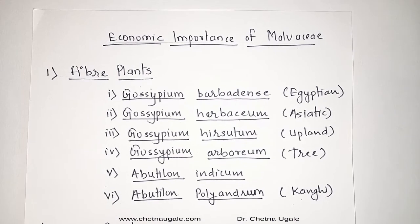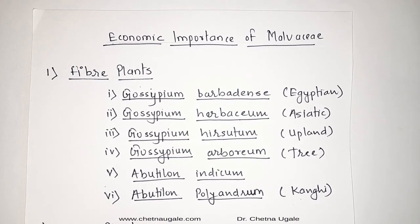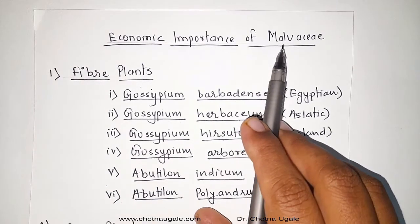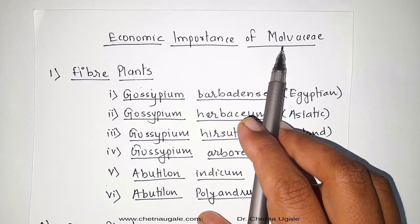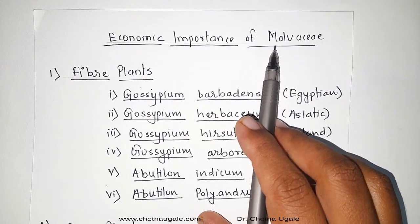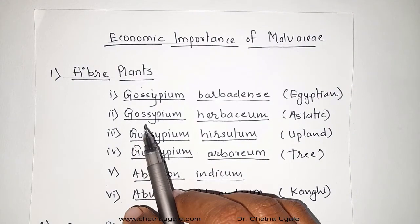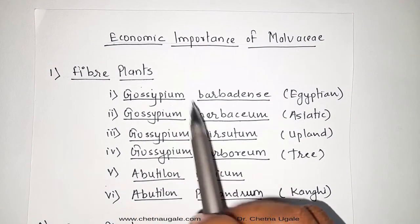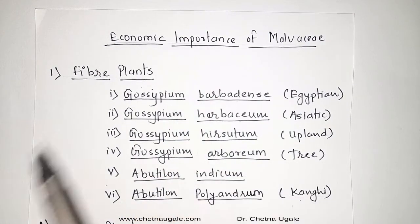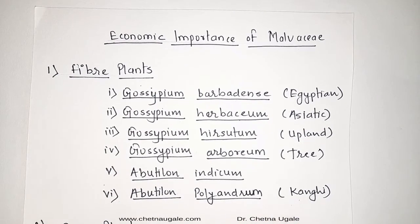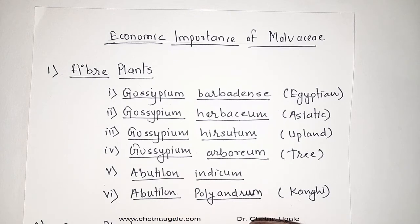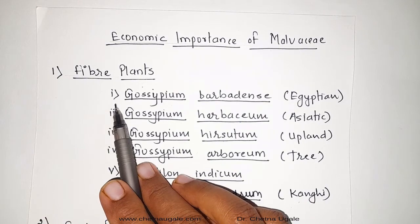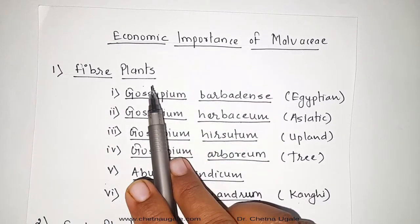Hello everyone, today we are going to see the economic importance of the Malvaceae family. This Malvaceae family is commonly called as the cotton family, as cotton is one of the plant fiber plants which belongs to the Malvaceae family and has great economic value. We will divide this economic importance into five different topics: fiber plants, food yielding plants, timber plants, medicinal plants, and ornamental plants.